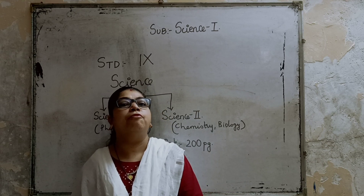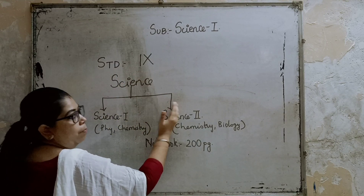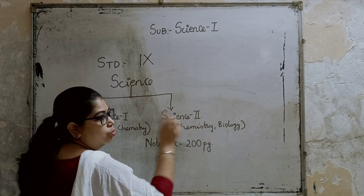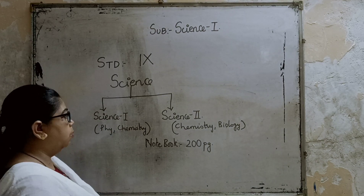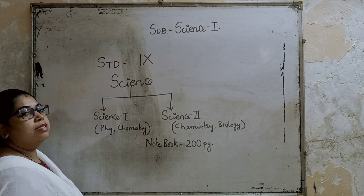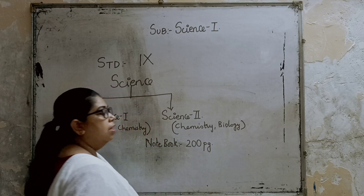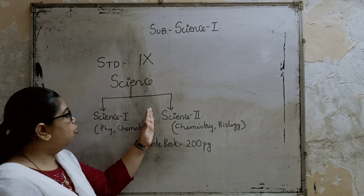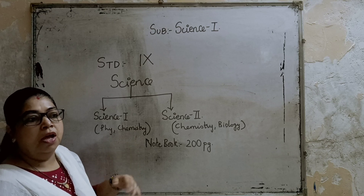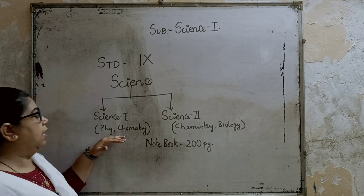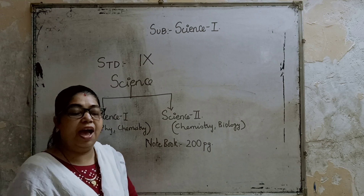In Standard 9th, science is divided into Part 1 and Part 2. Under Part 1, we are going to study chapters related to physics and chemistry. In Science Part 2, we are going to learn chapters related to chemistry and biology. In Part 2, we will study a few chapters of chemistry and lots of biology.